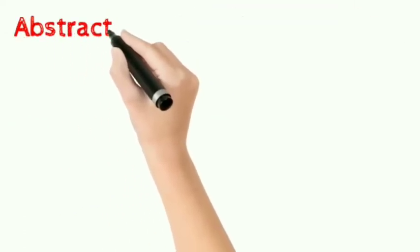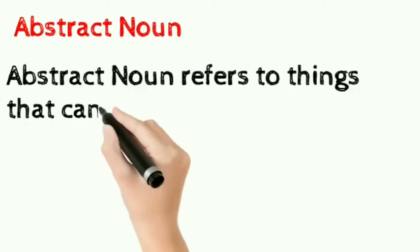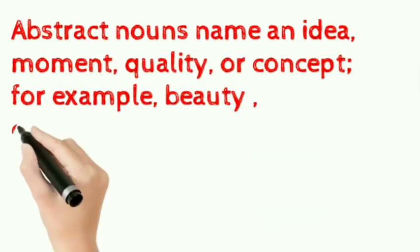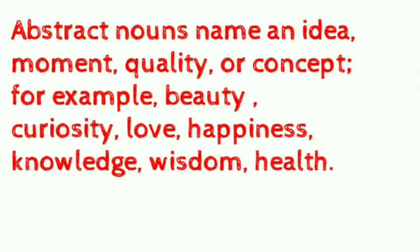Abstract nouns are like the opposite of concrete nouns. Abstract noun refers to things that cannot be detected through our five senses. Abstract nouns name an idea, moment, quality, or concept. For example: beauty, curiosity, love, happiness, knowledge, wisdom, and health. We can only feel these in our mind, but we cannot detect or express these feelings through our five senses.